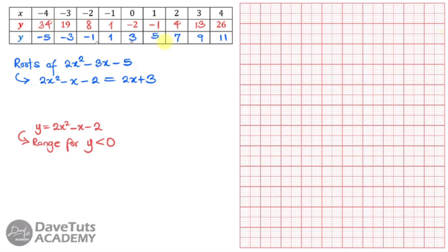Our table of values is now complete and ready to plot. The root of 2x² - 3x - 5 is the point where the quadratic equals the linear. Moving 2x to the left gives -2x, combining with -x gives -3x; moving 3 to the left gives -3, combined with -2 gives -5. So we need the point of intersection of the two graphs.